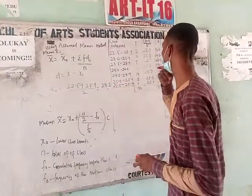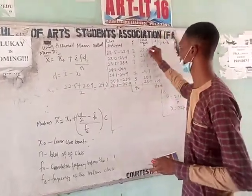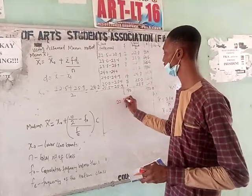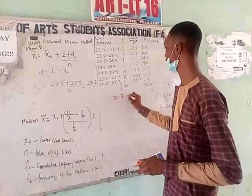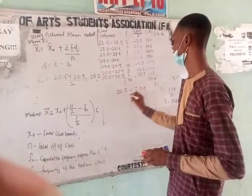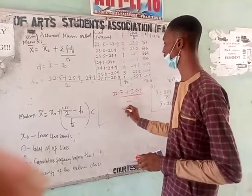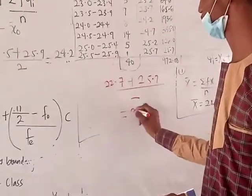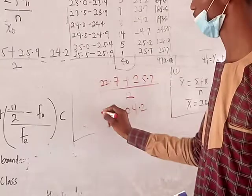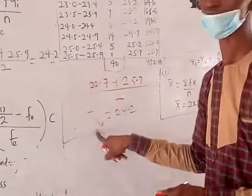Or you can do it this way: you add your first class number, which is 22.7, and your last class number, which is 20, divided by 2. You're still going to have your answer as 24. So this is your assumed mean.